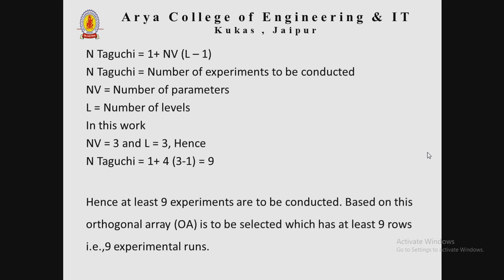Using the formula N_Taguchi = 1 + NV × (L − 1), with NV equal to 4 and L equal to 3: N_Taguchi = 1 + 4 × (3 − 1) = 1 + 4 × 2 = 9. Hence, at least 9 experiments are to be conducted. Based on this, an orthogonal array (OA) is to be selected with at least 9 rows, i.e., 9 experimental runs.